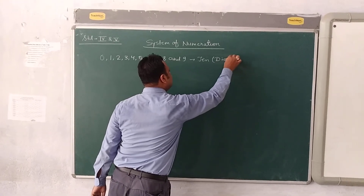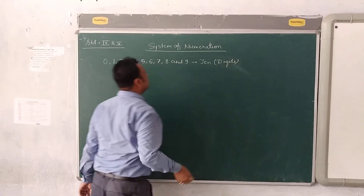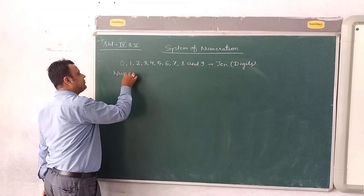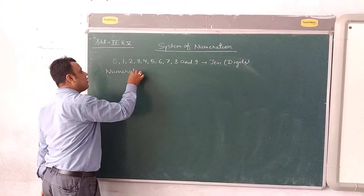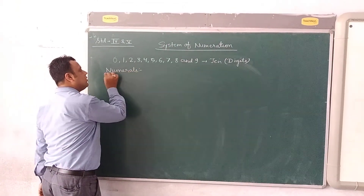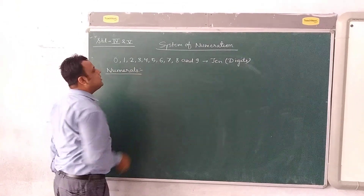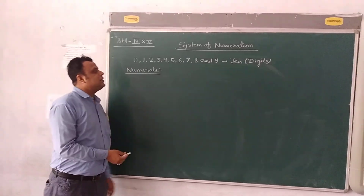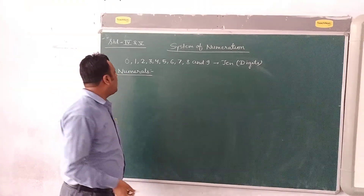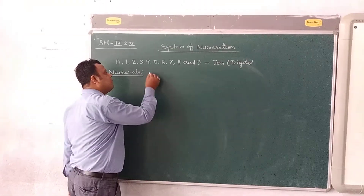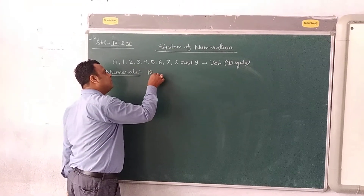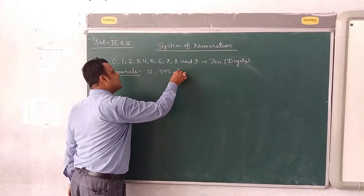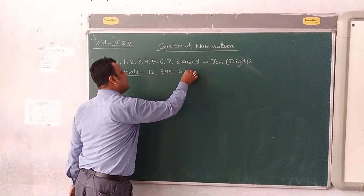Now let's know what a numeral is. The numbers formed by using these symbols — these digits — are known as numerals. For example: 12, 345, 6789.